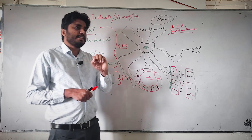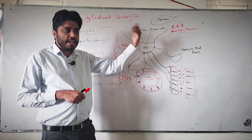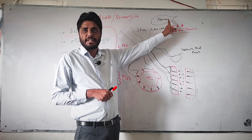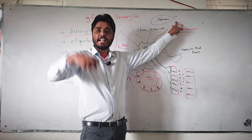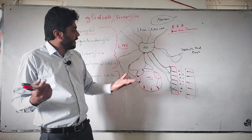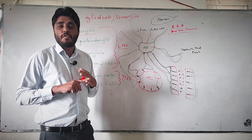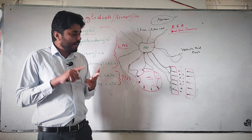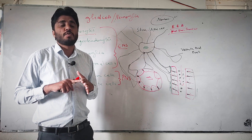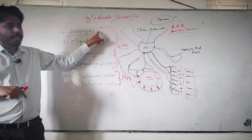It is also believed that astrocytes produce some growth factors that help in the growth of neurons in the early stage after birth. Remember, neurons do not divide — they just increase in size and grow. But glial cells like astrocytes do divide and undergo cell division. So the major functions of astrocytes include involvement in the blood-brain barrier, controlling molecular movement from blood to CNS, reducing toxicity, and controlling the metabolism of molecules like glutamate.